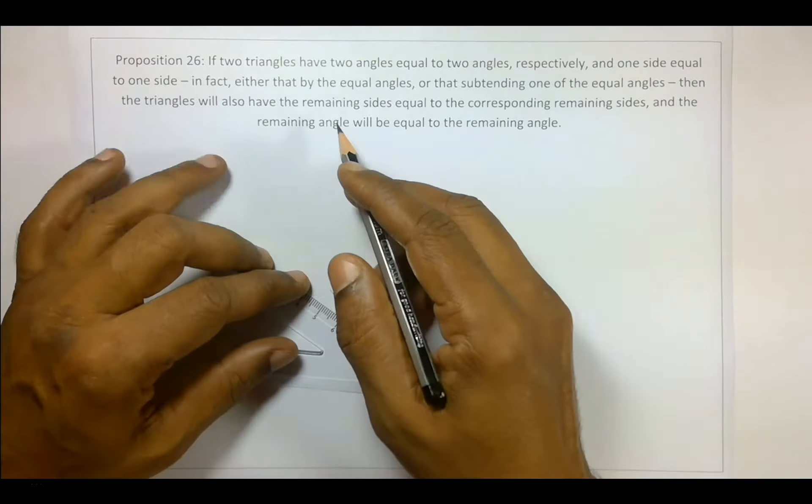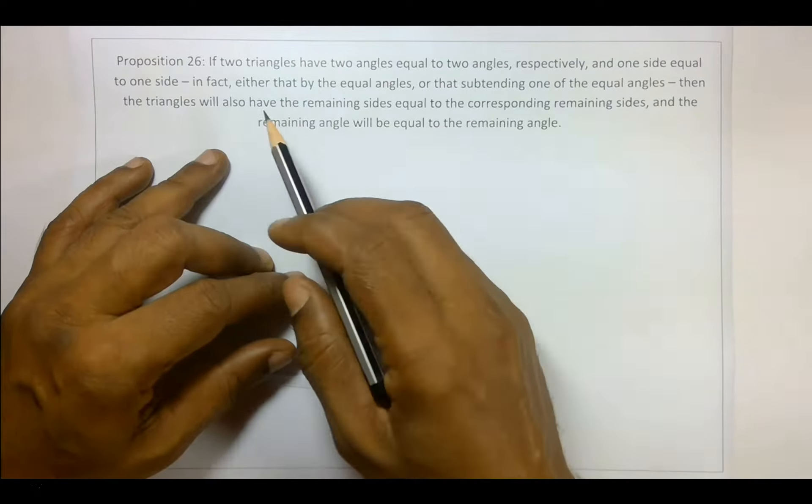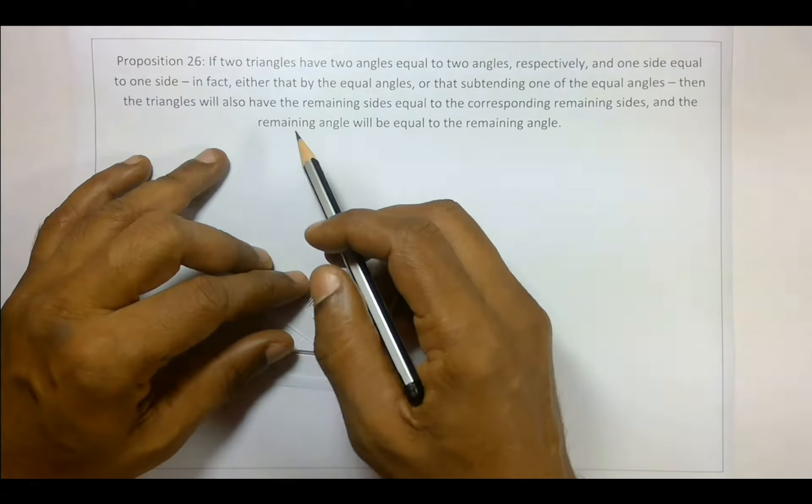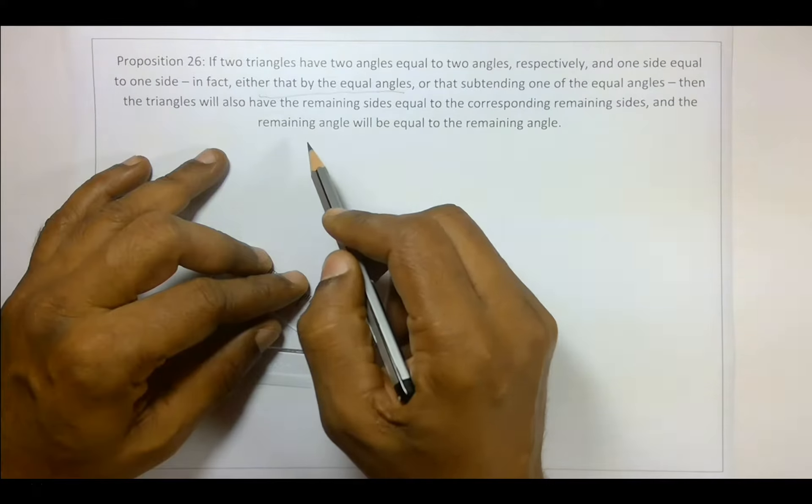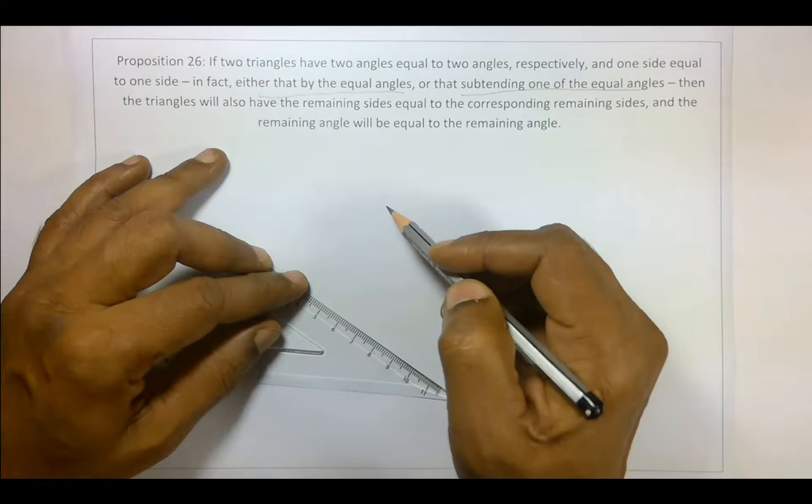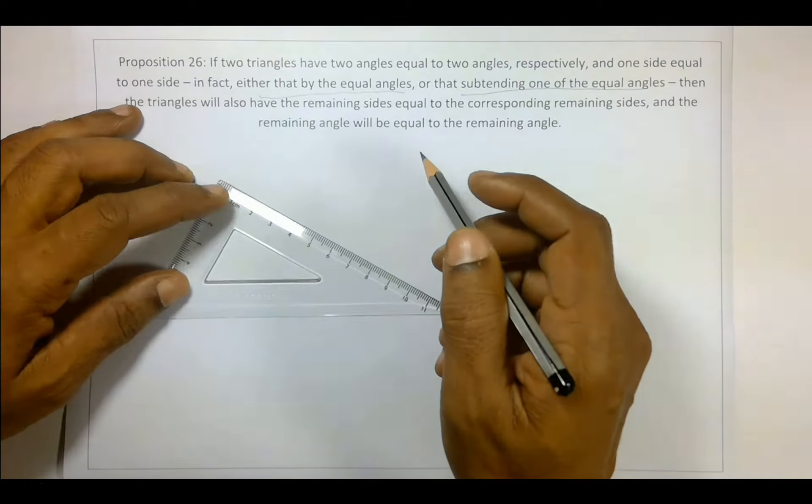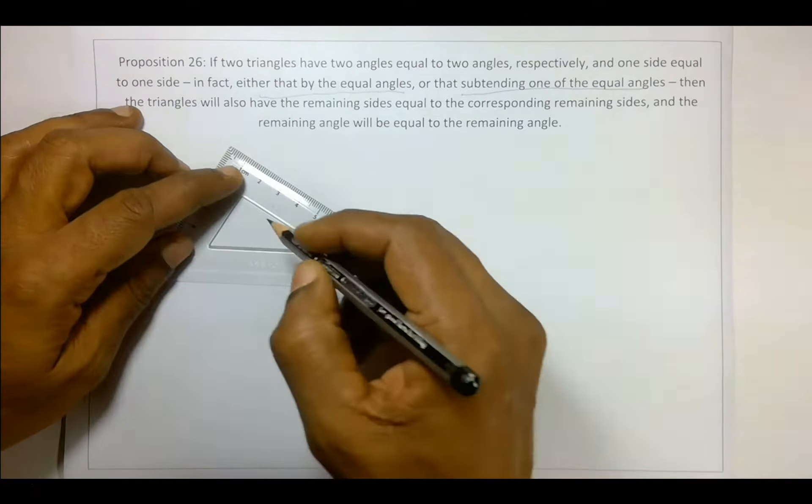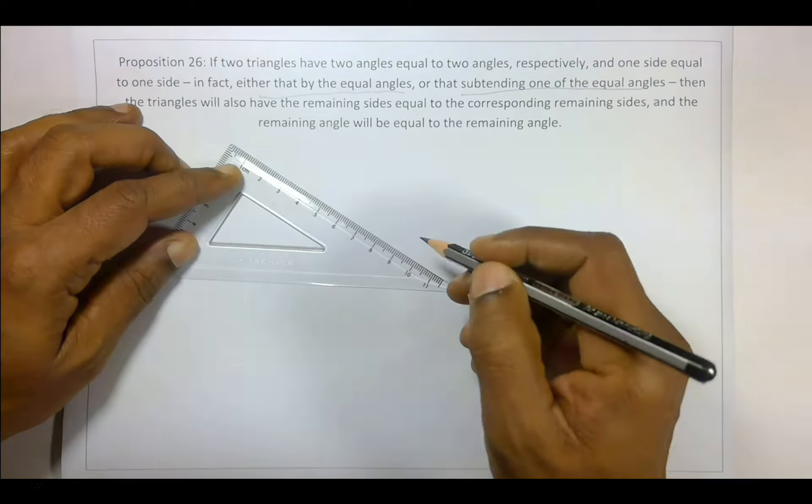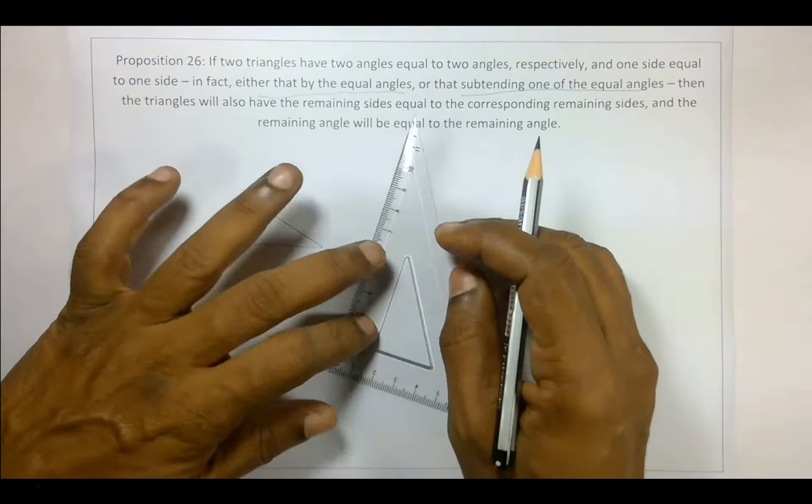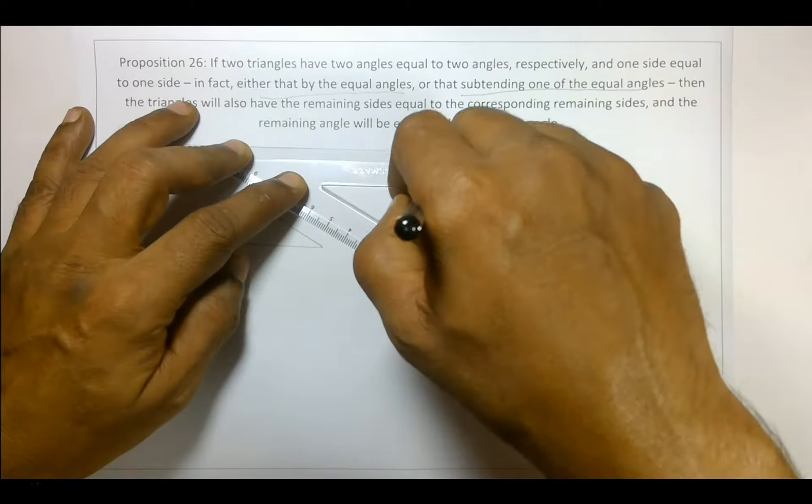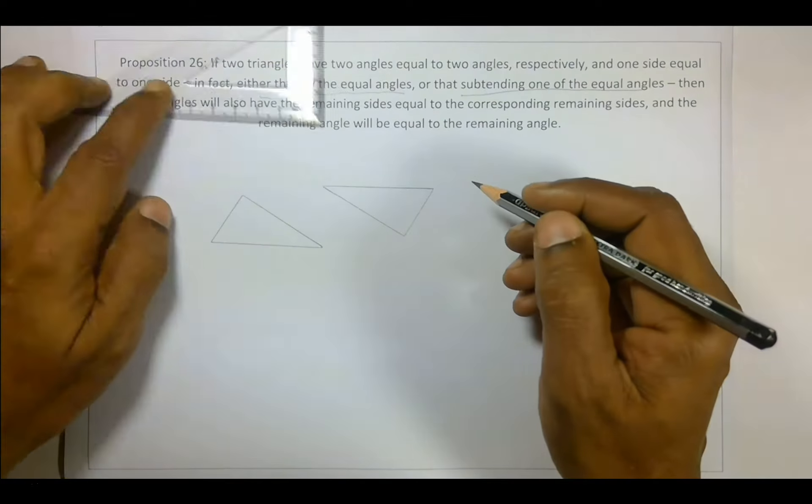Okay, in our previous video we saw the first part of Proposition 26. Now let's look at this part. The difference being, let's say we have two triangles.